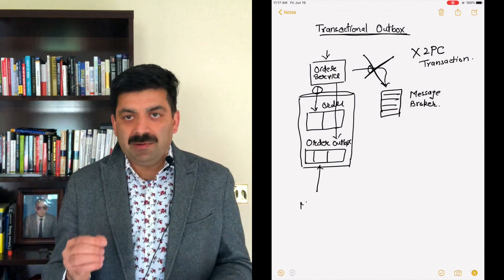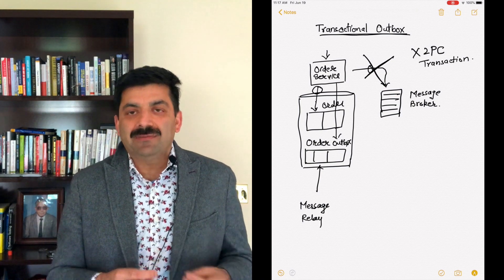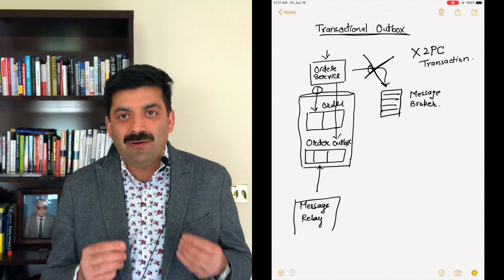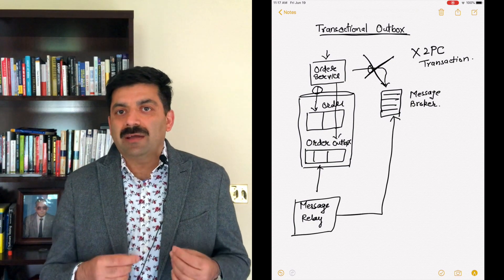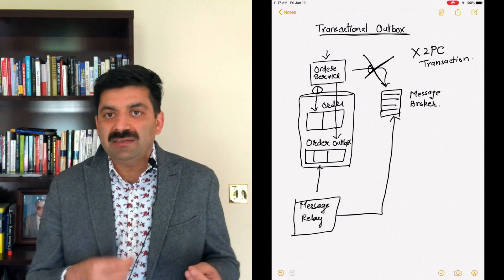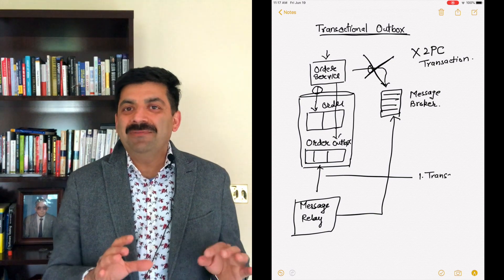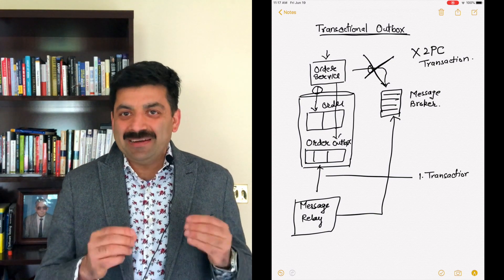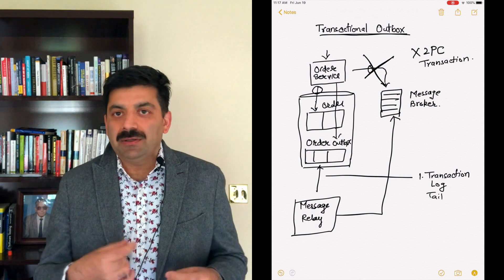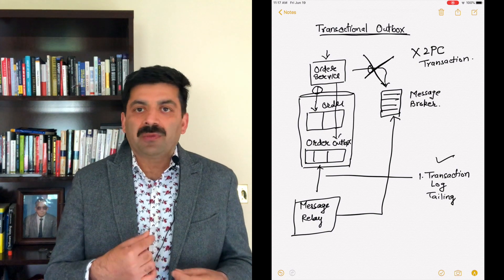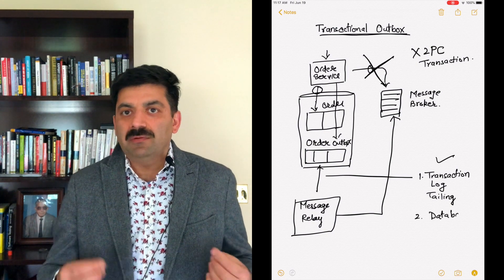When you are reading this outbox, there are two patterns. One is transaction log trailing, which I prefer. It goes through the log and finds any new message to be published to the message broker. Another traditional old way is database polling. I don't like database polling because you can take away resources, you can lock the table and create some overhead.